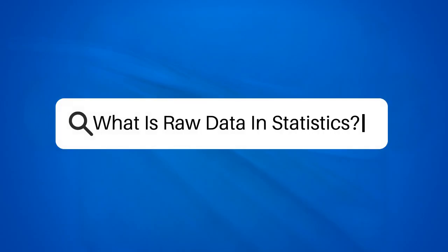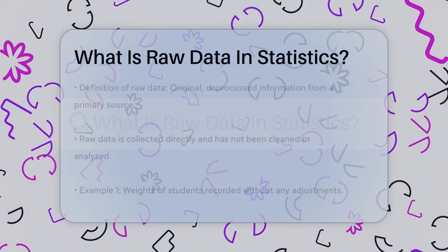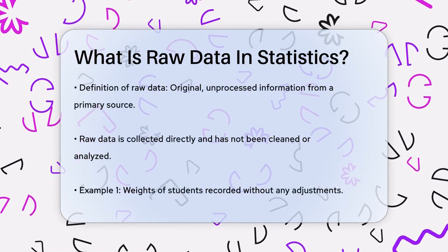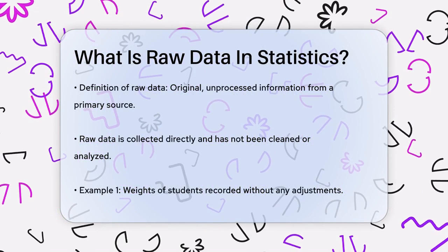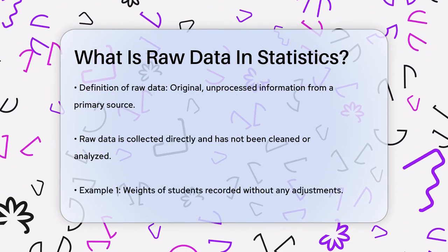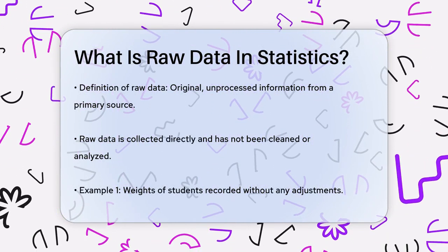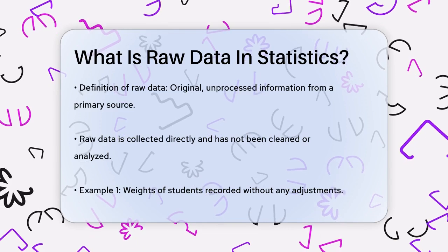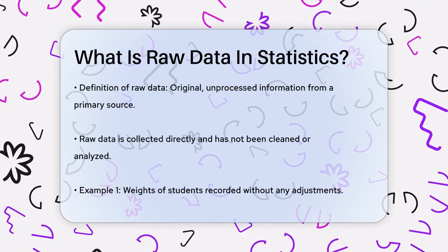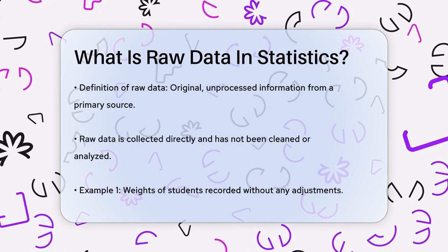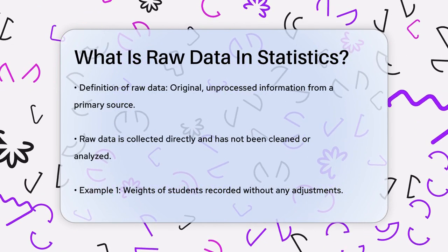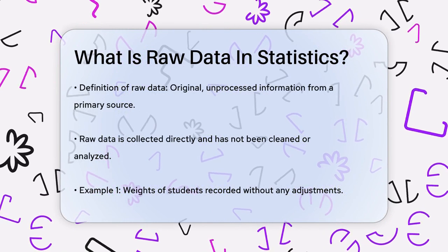What is raw data in statistics? If you're working on a statistics project or just curious about how data is collected and used, you might be wondering what raw data is. Let's break it down to understand this fundamental concept. Raw data is essentially the original, unprocessed information that you collect directly from a primary source. This means it hasn't been cleaned, transformed, or analyzed in any way.